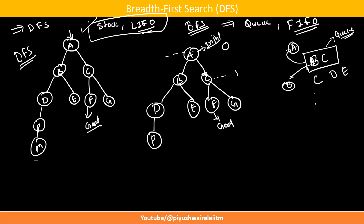Now we go to element C and explore it — it is not my goal state. But from C, I can go to F and G. So I will take C out; D and E come first, then F and G after that. According to the queue principle, our next node is D. It tries to explore D — not my goal state. But from D, I can go to P, so P will come at the last. Then the next node in our queue is E — it explores E, not my goal state. Then it will try to explore F. F is my particular goal state. So this is how BFS works: we search level by level, exploring all nodes at a particular level, then move to the next level.